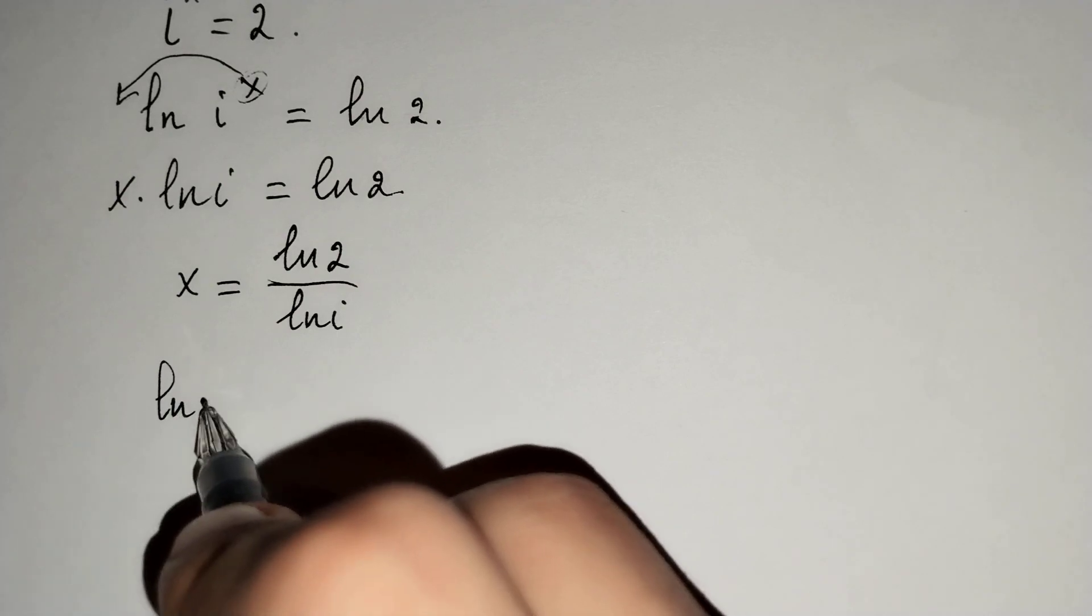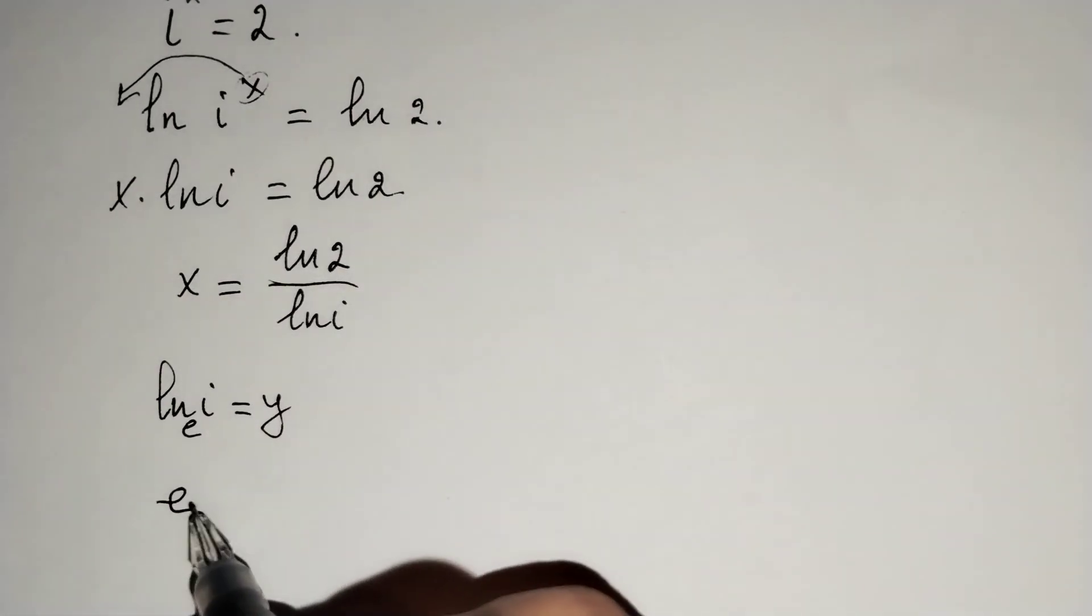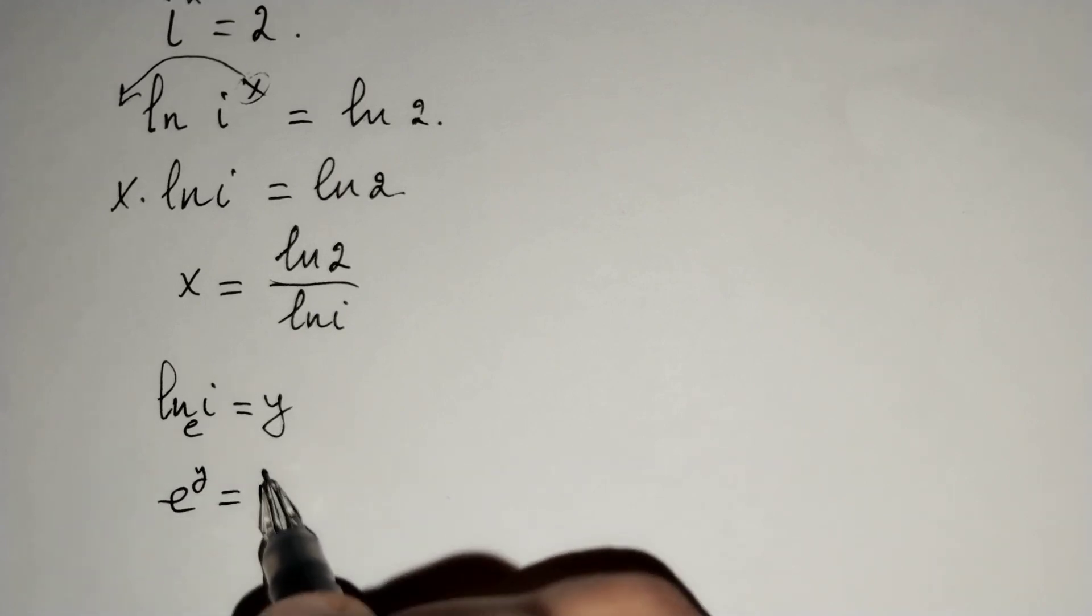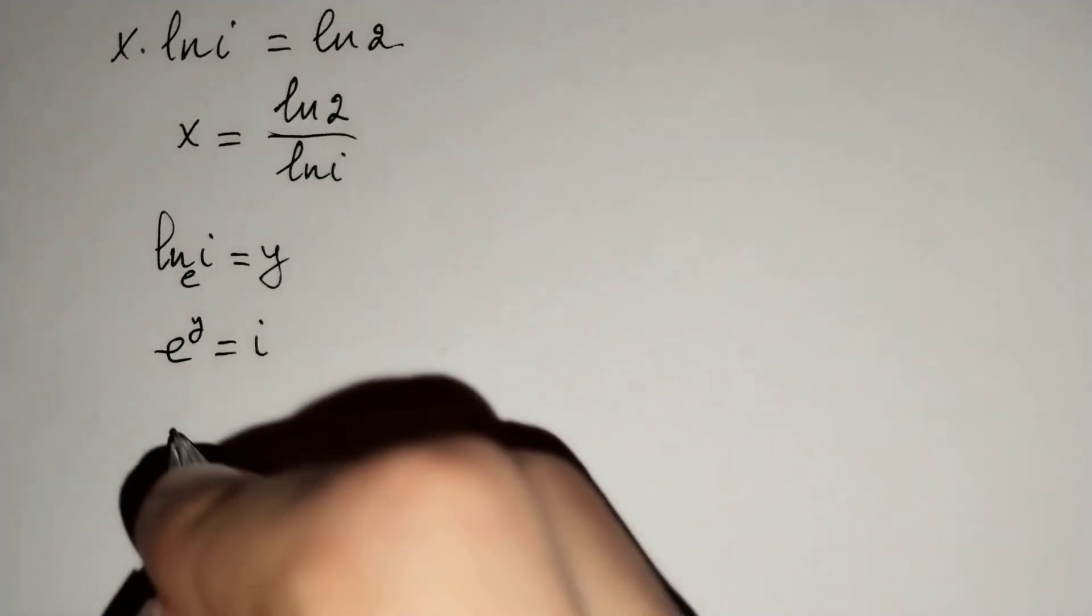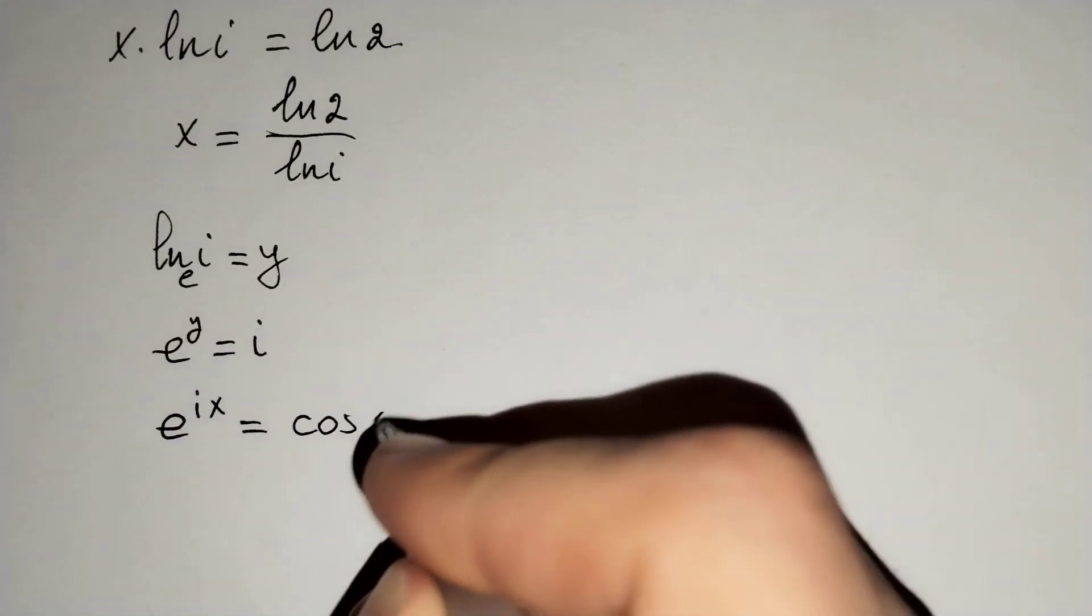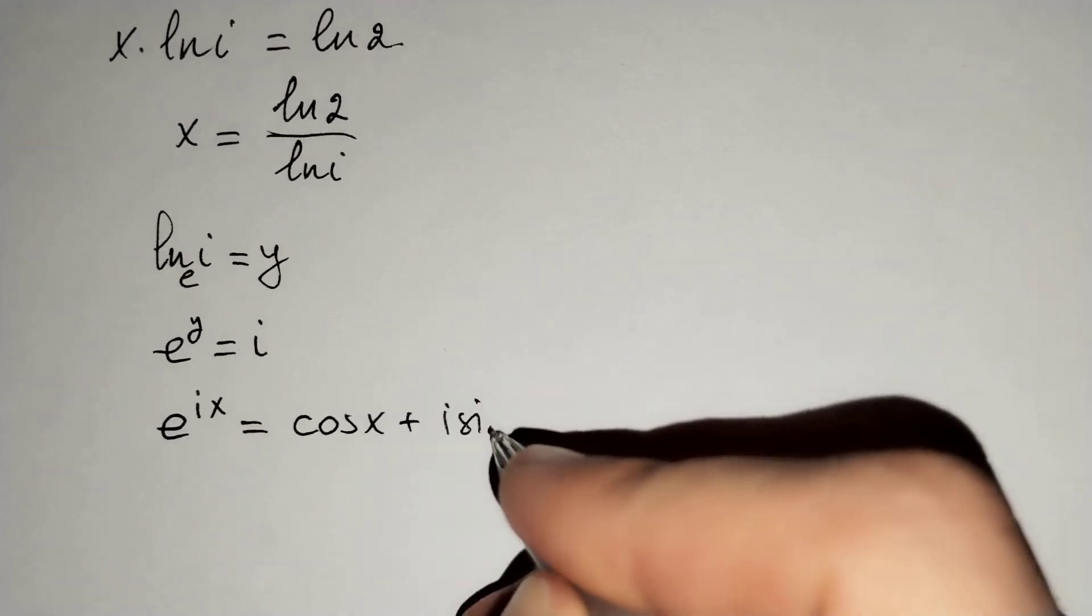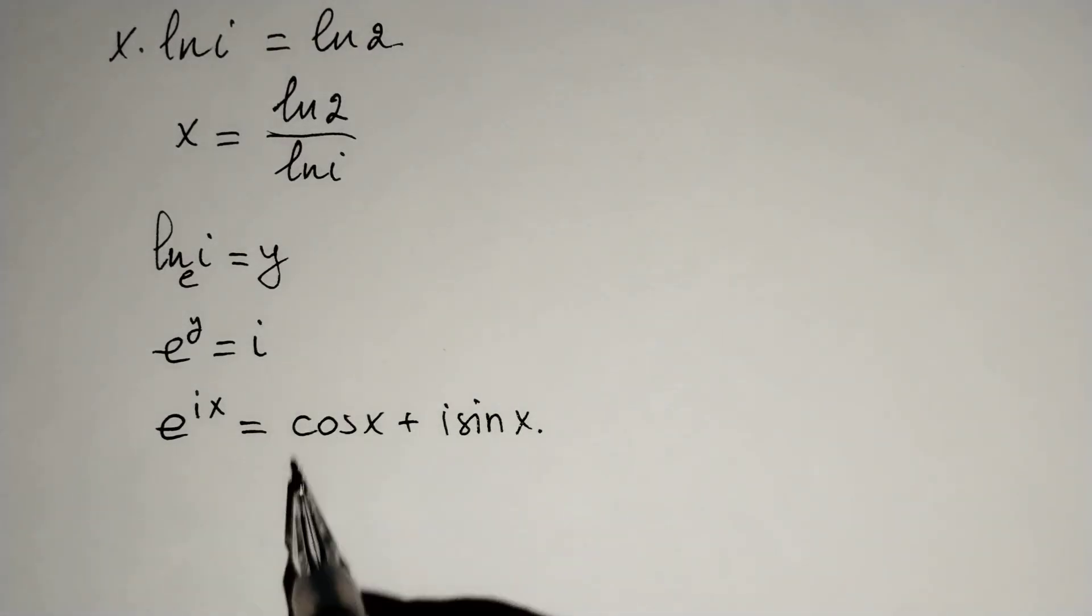If we think that ln i equals y, then e power y equals i. And we know from complex numbers that e power ix equals cosine x plus i sine x. If we compare these two equations,